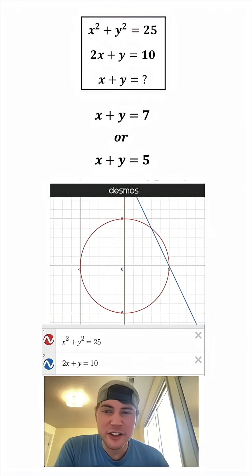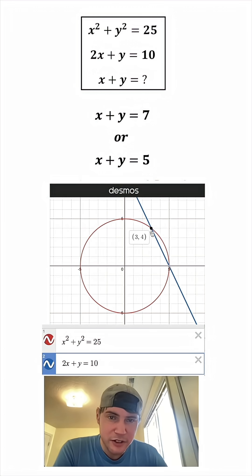And if you want to see what this looks like graphically, here it is right here. The X squared plus Y squared equals 25 is the red circle, and the 2X plus Y equals 10 is this blue line. And here's our two intersection points: 3, 4, and 5, 0. How exciting.